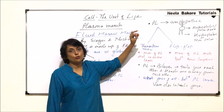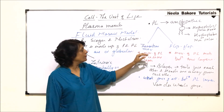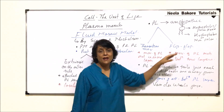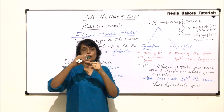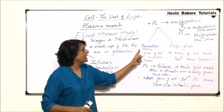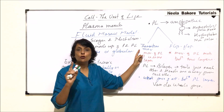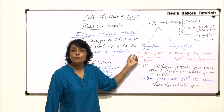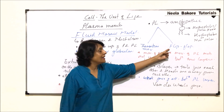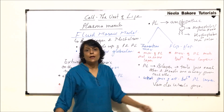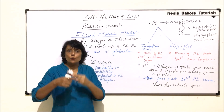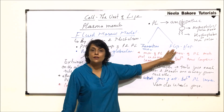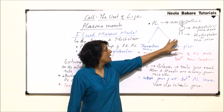Phospholipid molecules show two types of movements: transition and flip-flop. Since there are two layers in the bilayer, if molecules move within the same layer it is called transition movement, and if they move between the two layers, that is considered flip-flop movement.